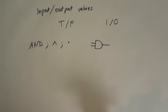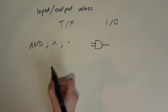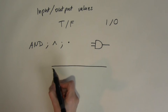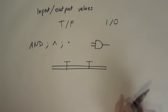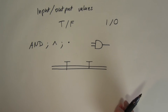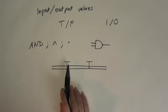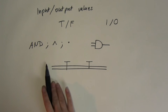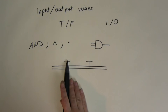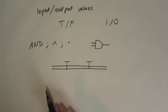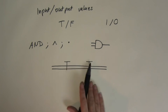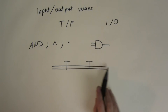The AND gate works like a water pipe fitted with two taps in series, one after the other. Water will only flow through if both taps are open. If one tap is turned off, the water stops there. If the other tap is also off, the water stops even earlier. So water can only flow through if all the taps are on.